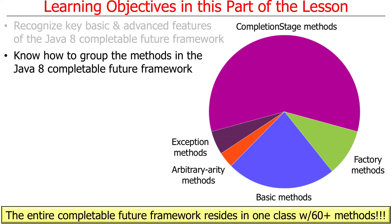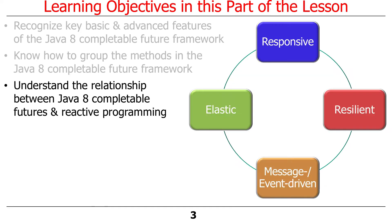There are another maybe eight or so basic methods, then four or so factory methods, a handful of arbitrary arity methods, and then probably three or four exception methods. So we'll talk about each of these different things, and I'll help you see how they fit together.